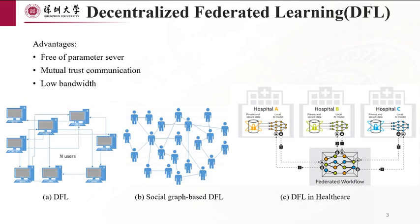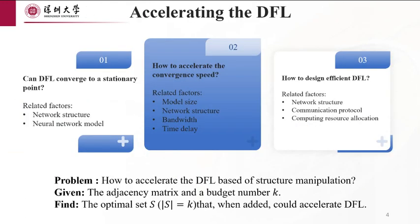Our primary focus is on understanding how decentralized federated learning accelerates. However, DFL will also face various challenges: Can DFL converge to a stationary point? How to accelerate the convergence speed? How to design an efficient DFL? To address these issues, I propose an optimization solution. The optimization problem is how to accelerate the DFL-based structure manipulation — find the optimal edge set that, when added, could accelerate DFL given an adjacency matrix and budget number.